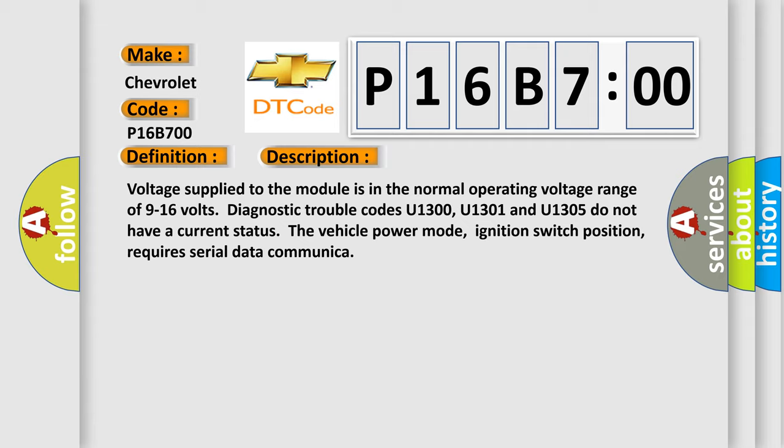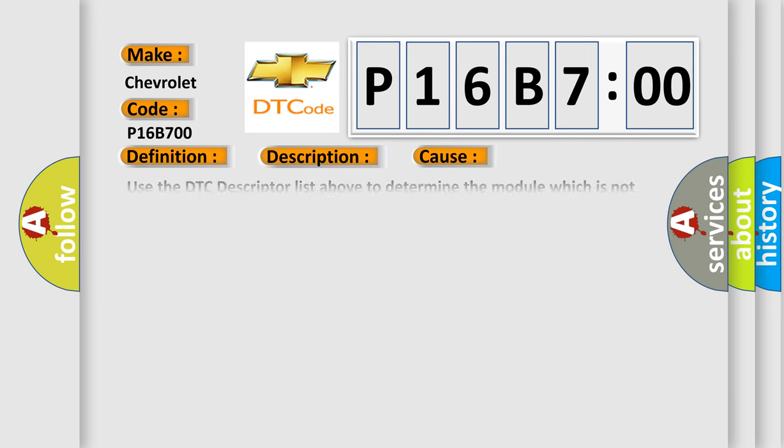Voltage supplied to the module is in the normal operating voltage range of 9 to 16 volts. Diagnostic trouble codes U1300, U1301, and U1305 do not have a current status. The vehicle power mode, ignition switch position, requires serial data communication. This diagnostic error occurs most often in these cases.